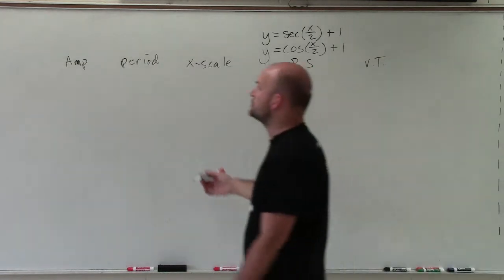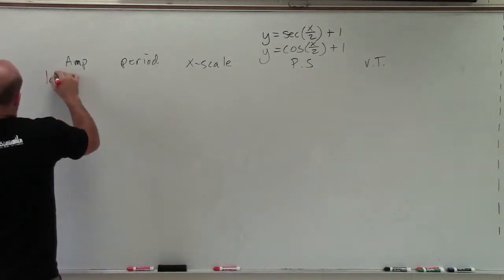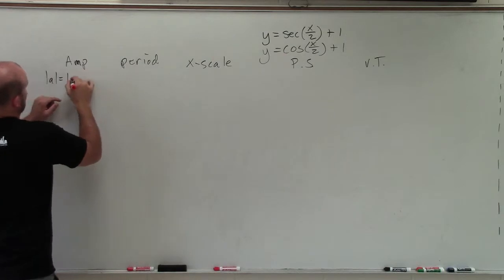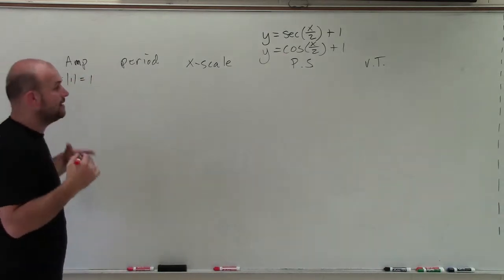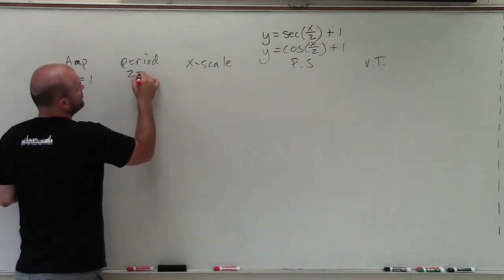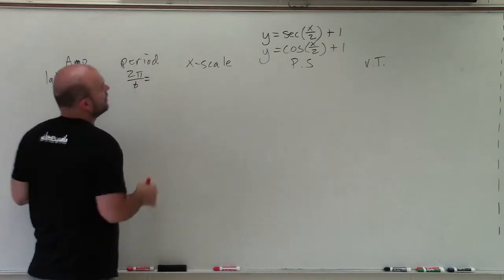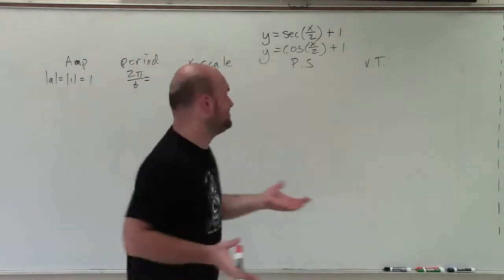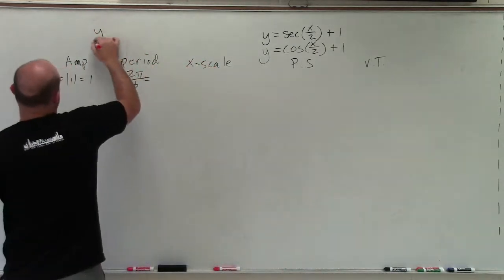So remember the amplitude is just the absolute value of a. Which in this case, our a is just going to be absolute value of 1, which is equal to 1. The period is going to be 2 pi divided by b. You probably are like, where's a and b and c all come from? Well, that comes from the standard form.